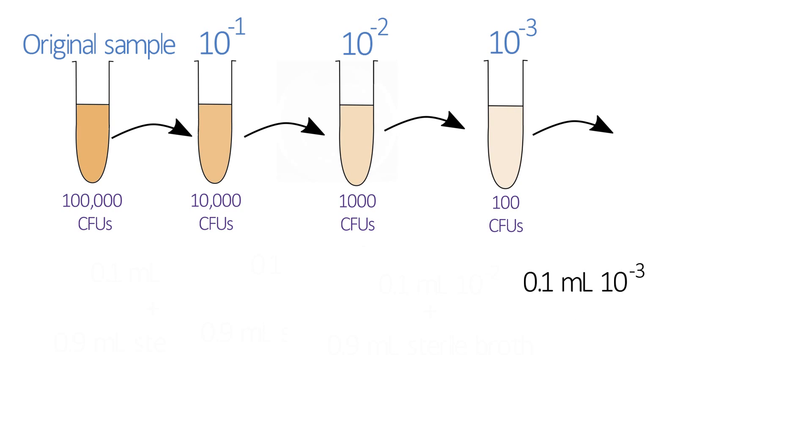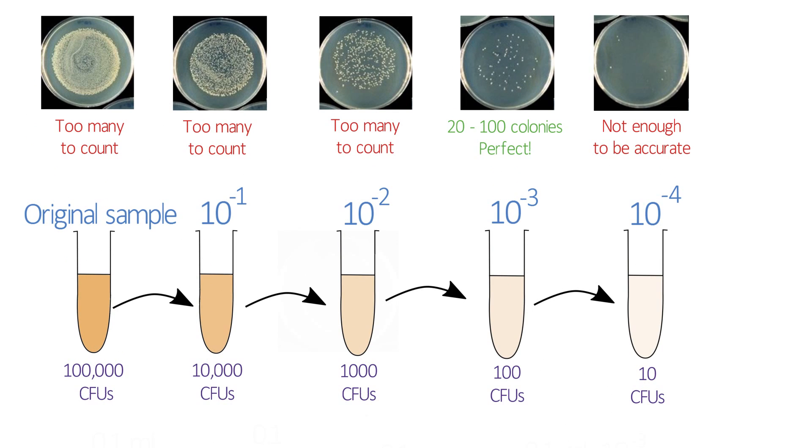You'll then spread 0.1 ml of each dilution onto a separate agar plate. In the second practical, you'll then count the colonies that grow on each plate. Remember, you're going to need to have between 20 and 100 colonies on at least one of the plates to get an accurate indication of the number of colony-forming units.